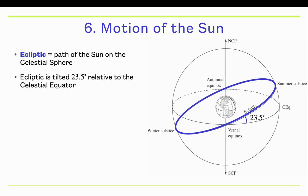The blue line is the ecliptic — that's the path of the Sun — and that great circle is tilted 23.5 degrees compared to the celestial equator.